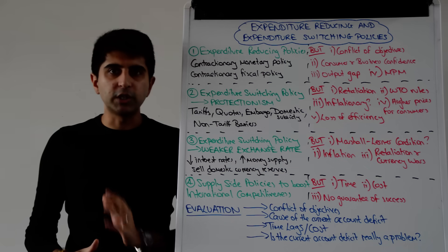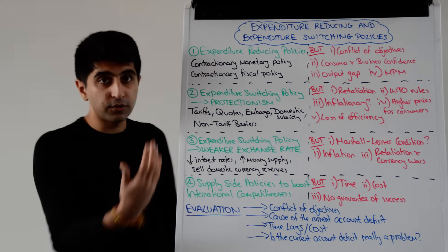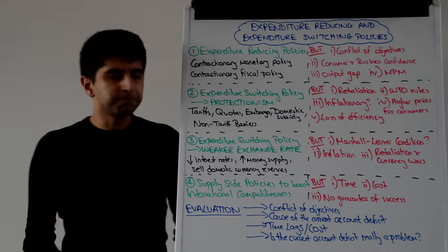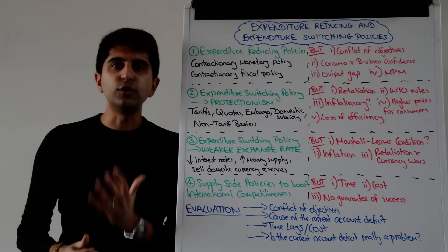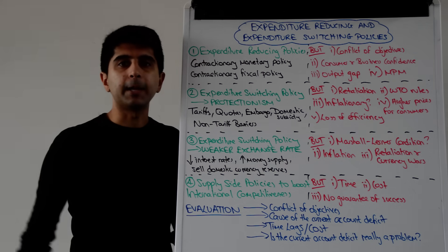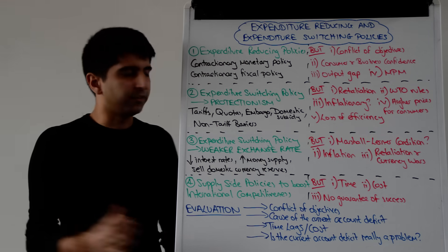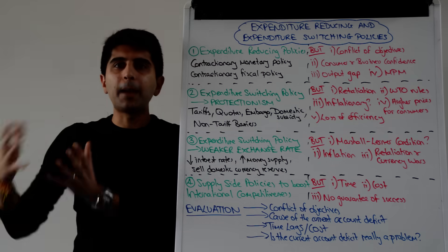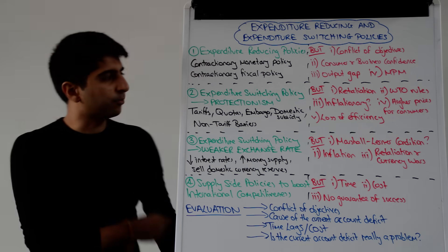We can look now at expenditure switching policy. One type of expenditure switching policy is to use protectionist policies, such as tariffs, quotas, embargoes, domestic subsidies, and non-tariff barriers. A government can target certain imports of goods and services and use protectionism to reduce import expenditure on those items. Or if using domestic subsidies, to switch the spending on imports towards domestic goods instead — hence the title, expenditure switching policies.